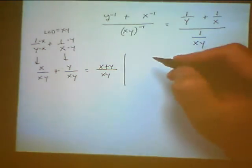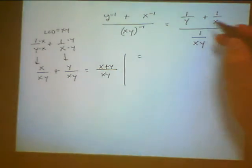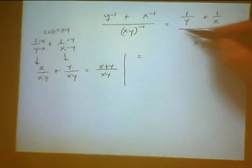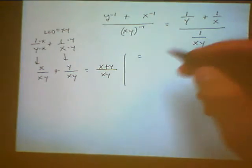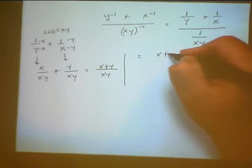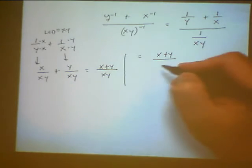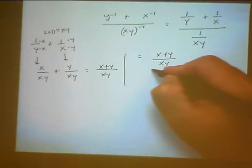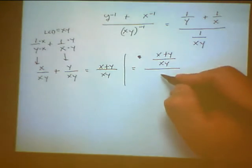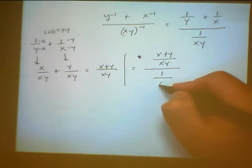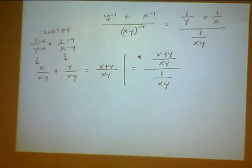So now, if I go back to my complex fraction, I can replace one over y plus one over x with this x plus y over xy. And then all that is over one over xy. So now I have one fraction over one fraction.